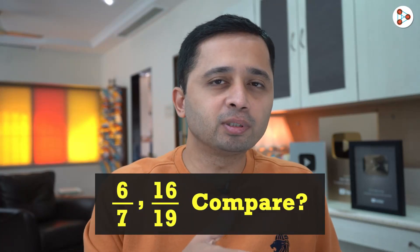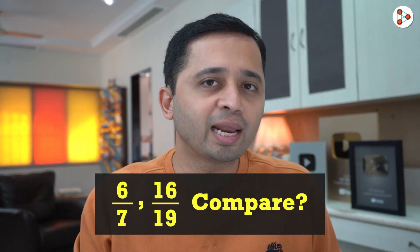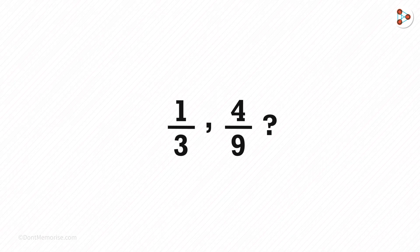Can you tell me the bigger number from the smaller one without using a calculator? Let us take two fractions, 1 over 3 and 4 over 9.